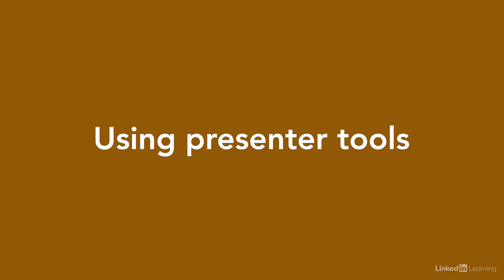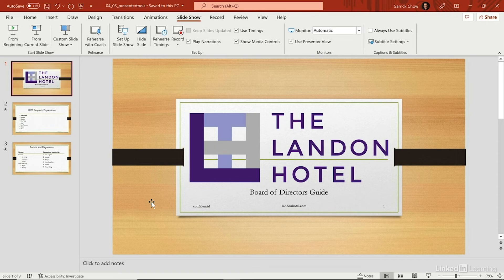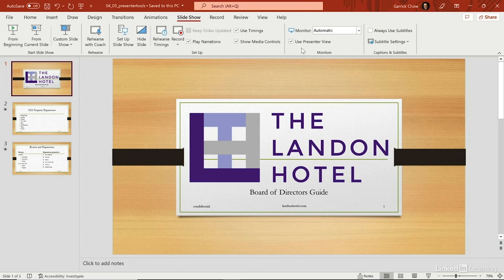When you're in a presenting situation with your computer hooked up to a projector or second monitor, PowerPoint gives you a set of presenter tools to keep track of things like your slide notes, the current time, and upcoming slides. These tools show up by default whenever you have a second display, but be sure to go to the Slideshow tab and make sure 'Use Presenter View' is checked. You can also enter Presenter View without a second display if you want to set it up before going in front of a live audience.